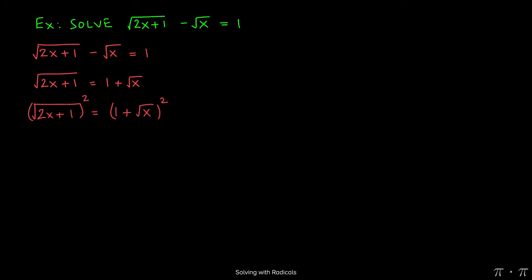At this stage, we can square both sides because we have a single radical isolated by itself on each side of the equation. On the left-hand side, the square root and the square cancel each other out, yielding just 2x plus 1.